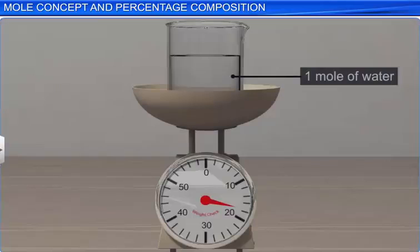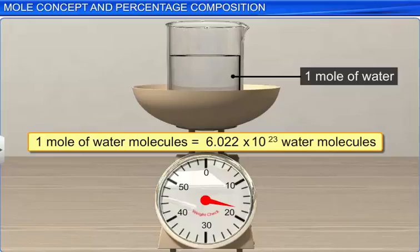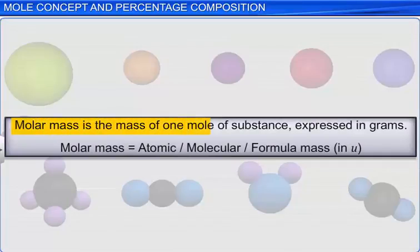Thus, we can say that one mole of water molecules contains 6.022 × 10²³ water molecules. Having found the number of moles in a substance, we can determine the mass of a mole, also known as molar mass. Molar mass is the mass of one mole of substance expressed in grams. The molar mass is numerically equivalent to the atomic, molecular, or formula mass in u.